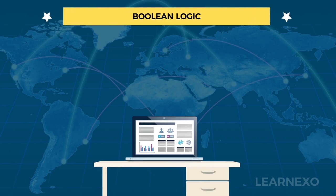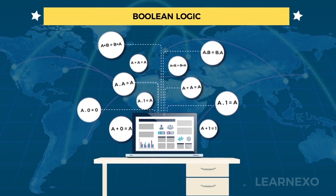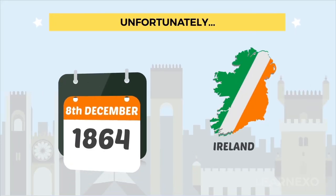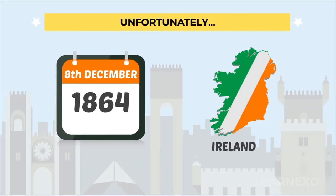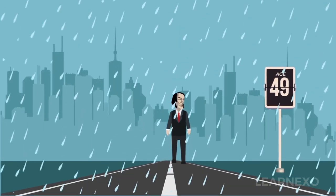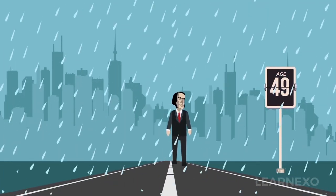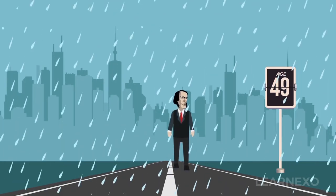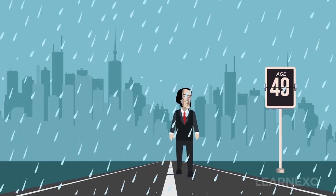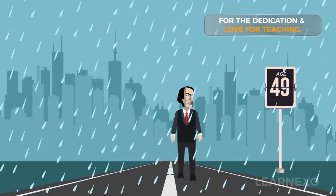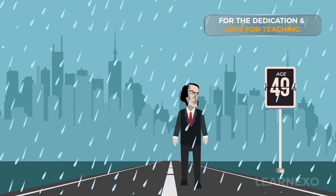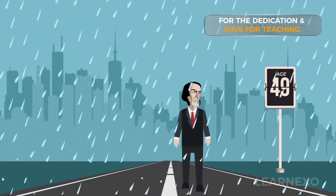Boolean logic is the foundation of the information age. Unfortunately, George Boole died on 8th December 1864 in Ireland at the age of 49, having walked a distance of 3 miles in heavy rain from his home to the university — out of dedication and love for teaching — and lectured wearing his wet clothes.